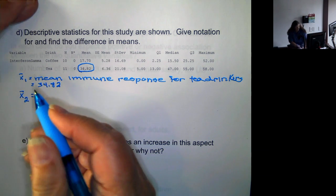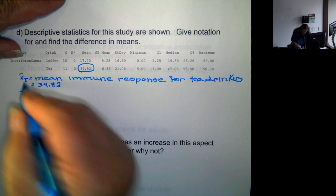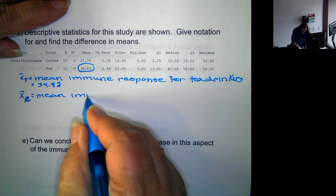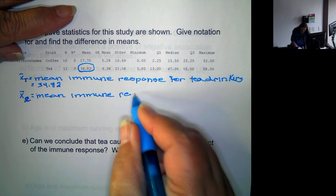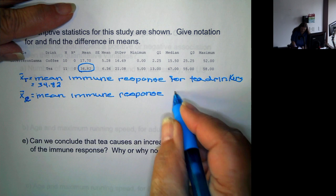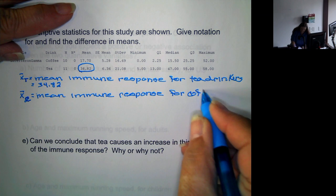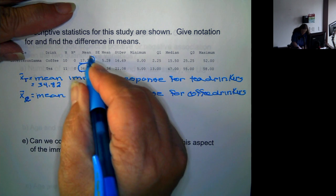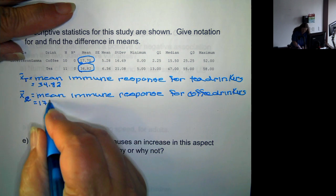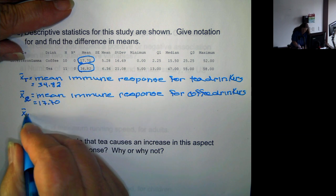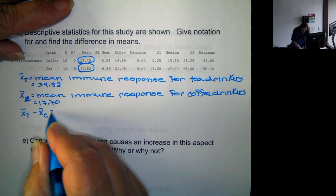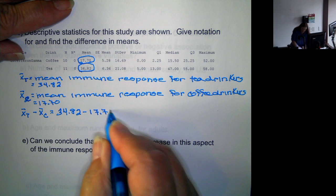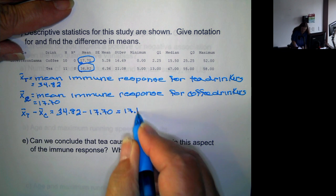X bar sub C for coffee, this is the mean immune response for coffee drinkers, that's 17.70. So the difference in the means, you have X bar sub T minus X bar sub C, which is 34.82 minus 17.70, which is 17.12.